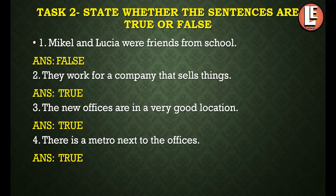The next question is: state whether the sentences are true or false. First sentence — Michael and Lucia were friends from school. This is false; there is no mention of them being school friends. Second — they work for a company that sells things. This is true, because they attended a sales meeting. Third — the new offices are in a very good location. This is true. Fourth — there is a metro next to the offices. This is also true.